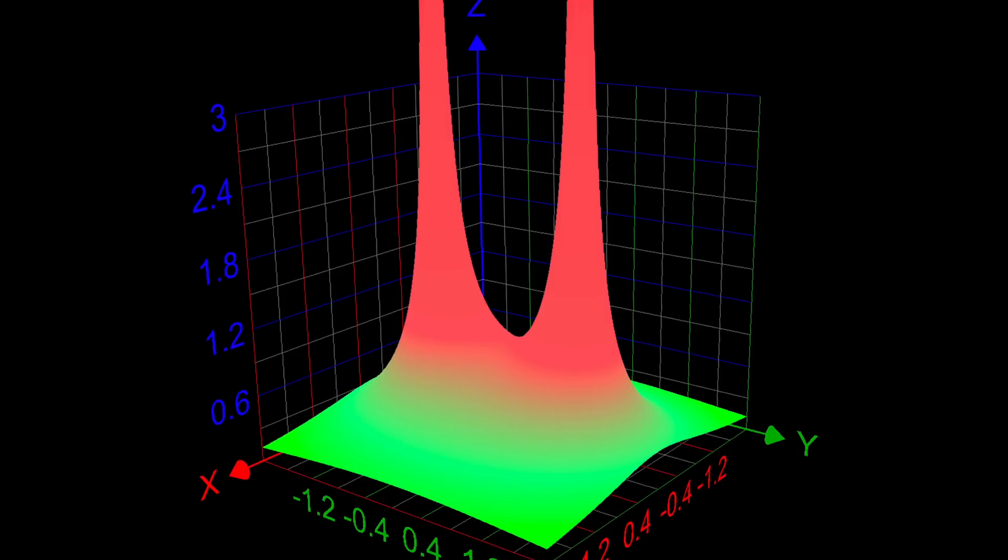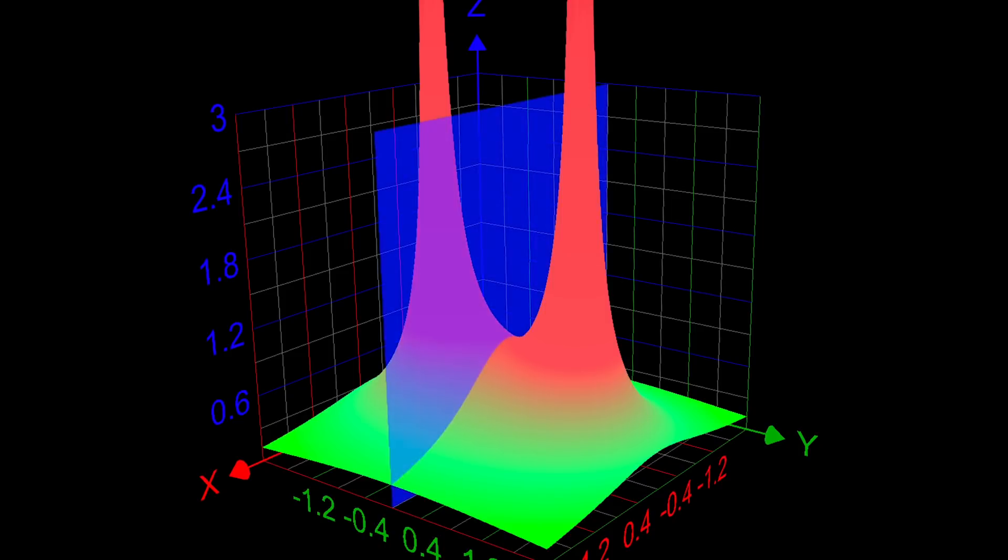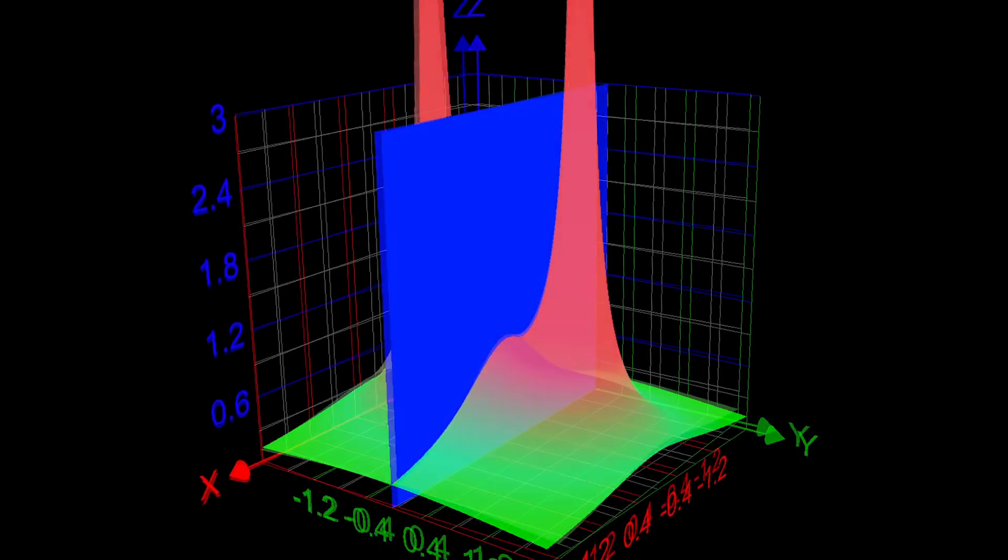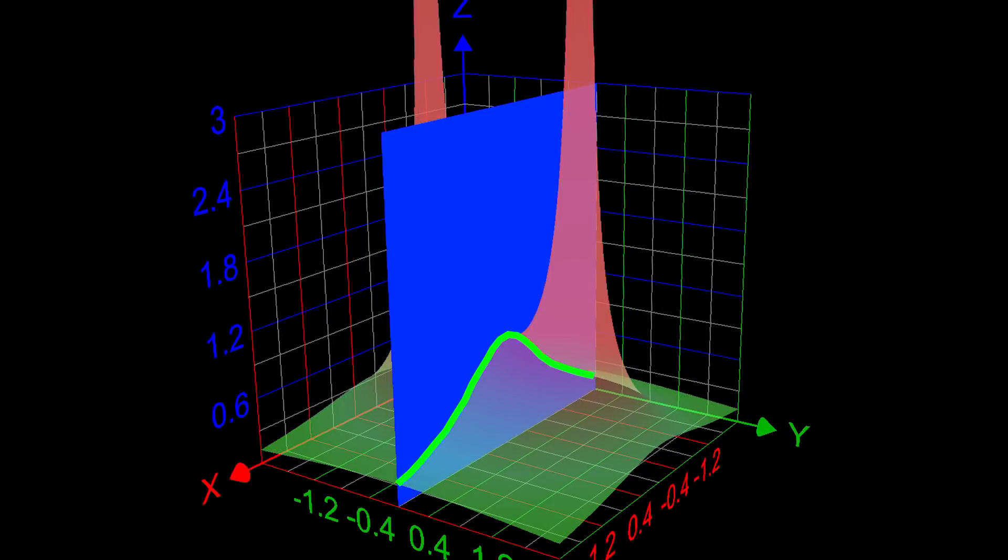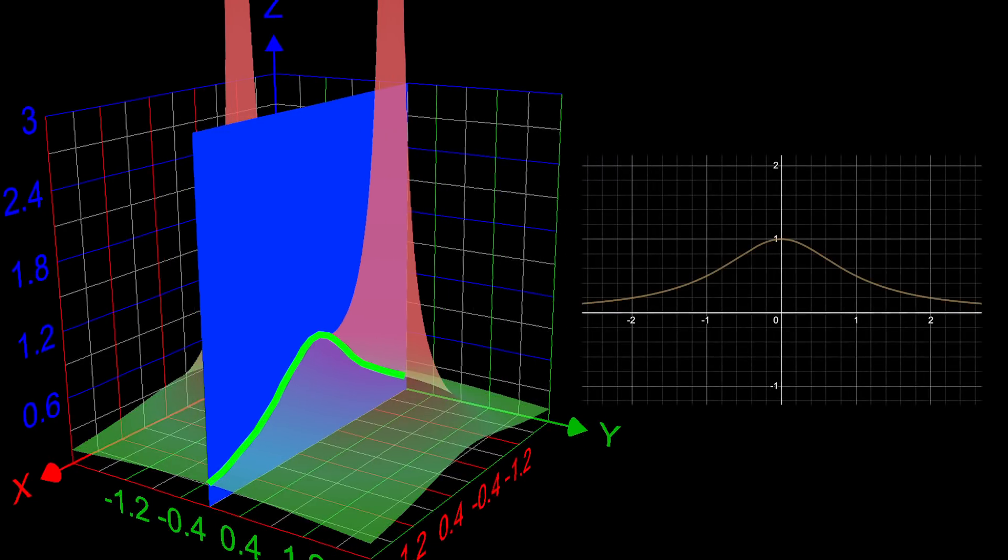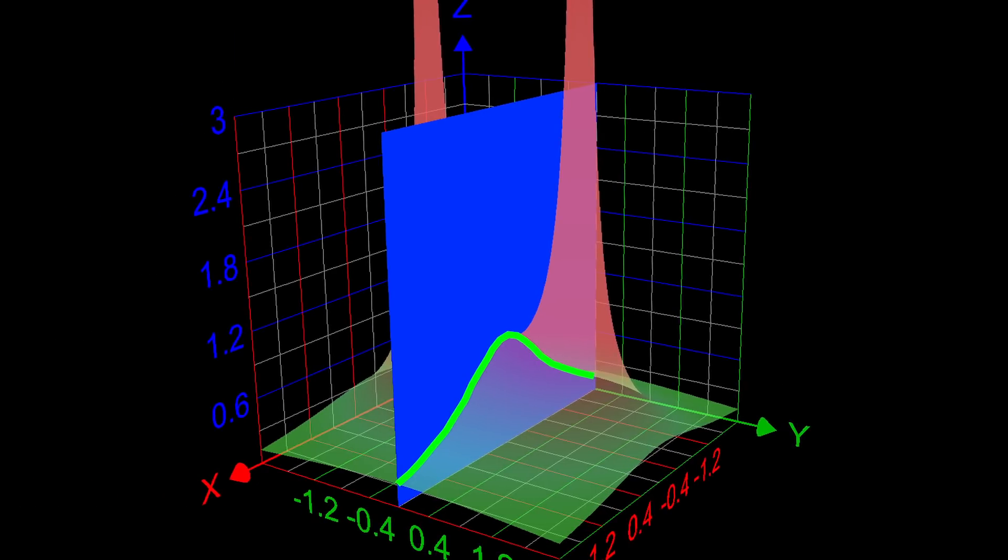And here, if I graph the plane y equals 0, you can kind of see that the intersection there is the 2D plot of 1 over 1 plus x squared, when the inputs are only real numbers. Same thing as before. Everything else corresponds to an input with an imaginary component. And at plus and minus i, we see those two singularities as expected.